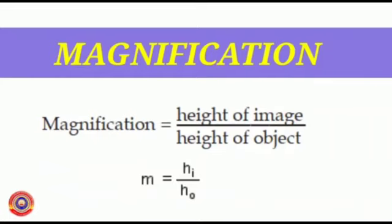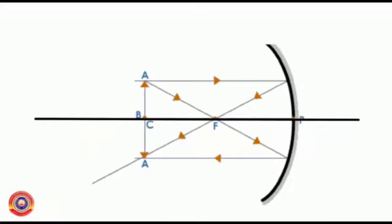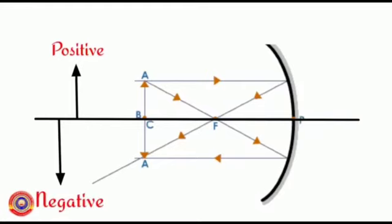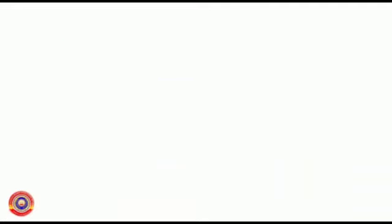Magnification M equals H I divided by H O. While calculating the magnification, the measurement taken upwards from the principal axis is considered as positive and the measurements downwards are considered as negative. Magnification is a physical quantity having no unit.